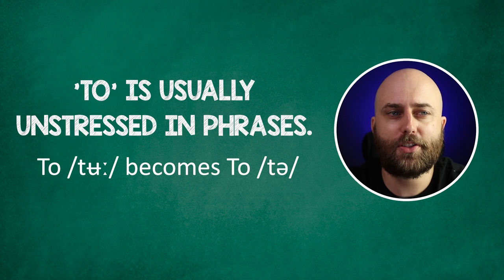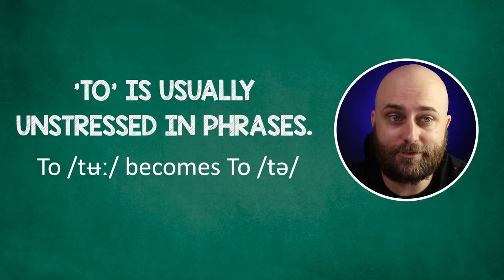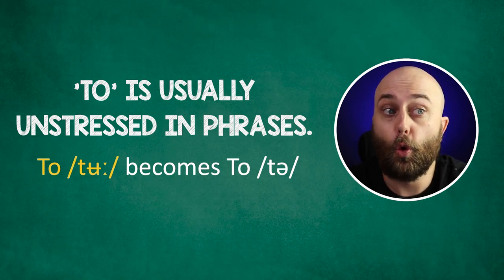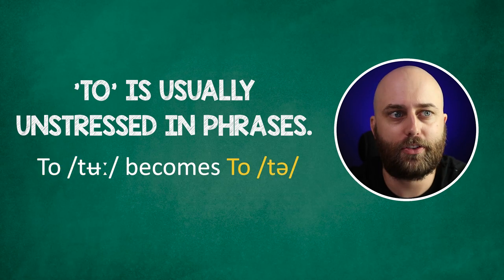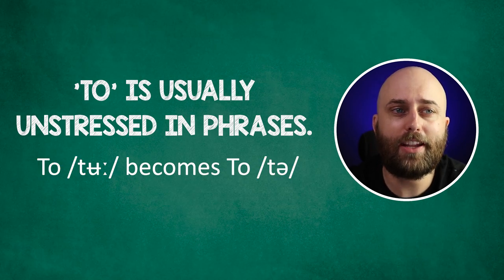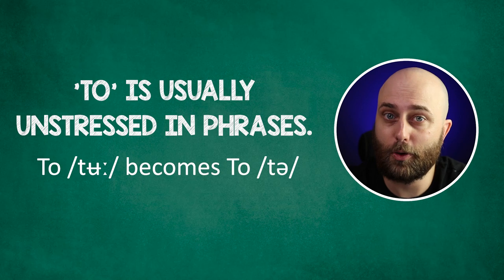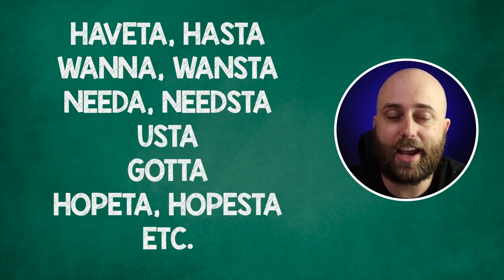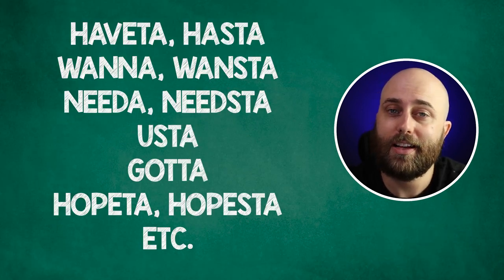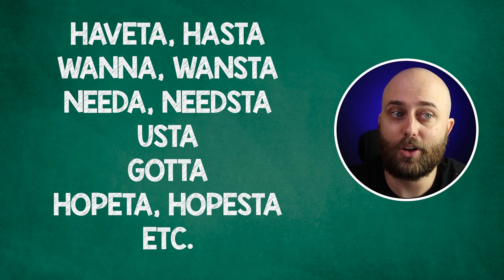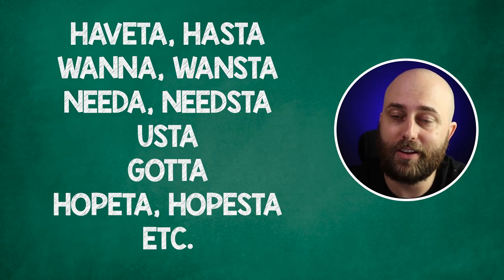So, here's a question for you guys — can you think of any other verbs where you can use 'to' to replace a verb clause after them in spoken English? Leave a comment below. 'To' is a preposition that's usually unstressed in phrases, so the vowel sound becomes the schwa sound. As a result, you may hear it contracted onto verbs in spoken English, such as 'hafta,' 'hasta,' 'wanna,' 'wantsta,' 'needta,' 'needsta,' 'usedta,' 'gotta,' 'hopeta,' 'hopesta,' etc.